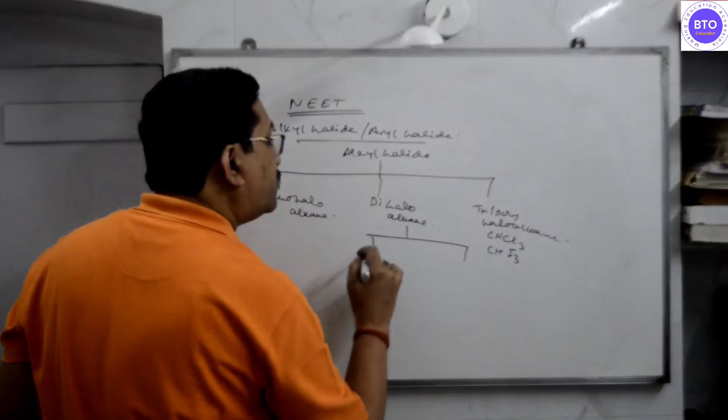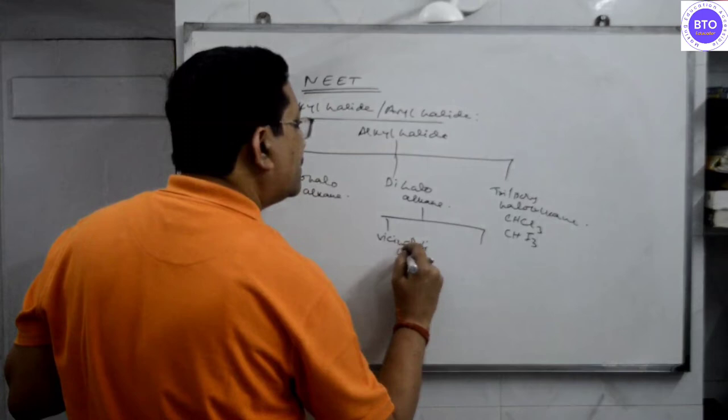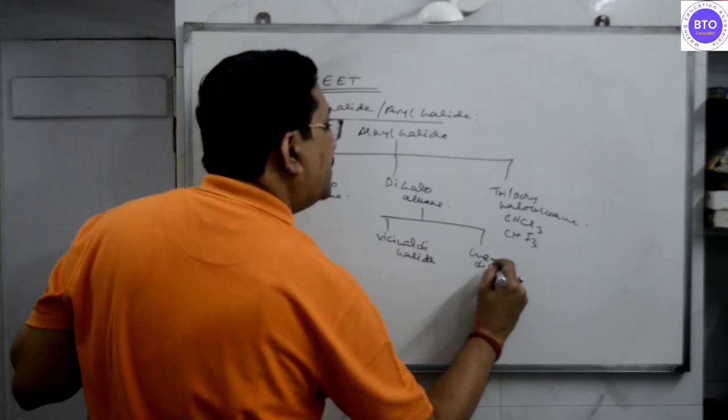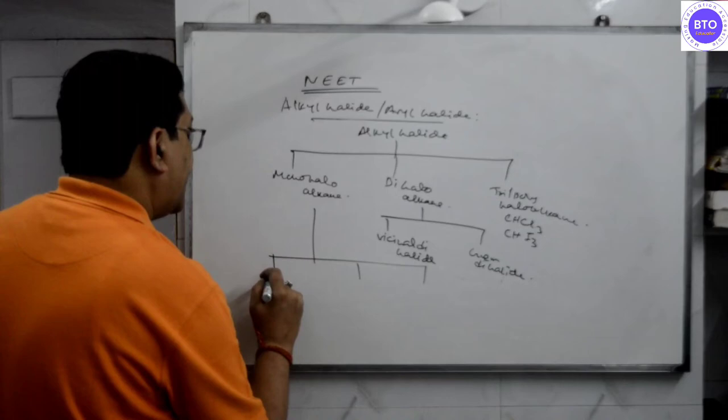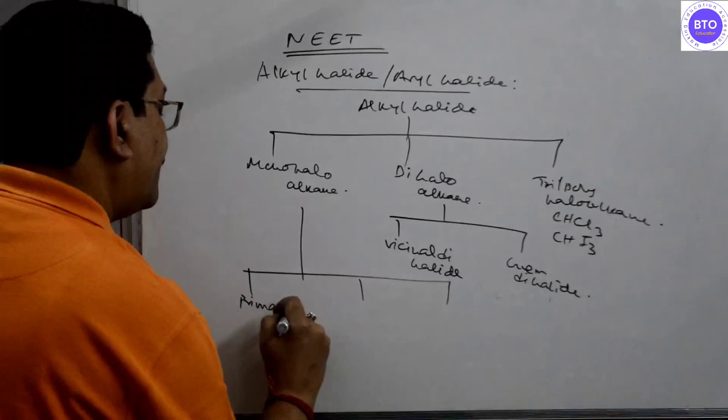Di-halo alkanes can be classified into two classes: Vicinal di-halo alkyl halides and Gem di-halo alkyl halides.